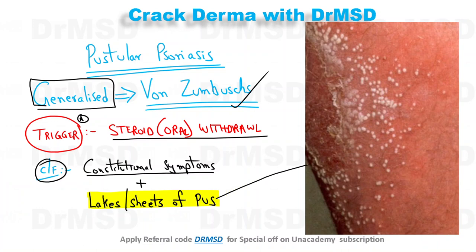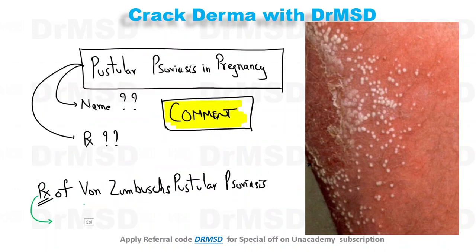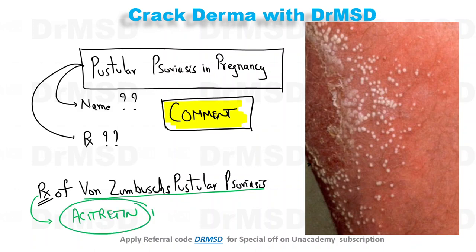This picture could be asked as an image-based question in the INICET exam, so you should be very confident about this clinical picture. The treatment of Von Zumbusch pustular psoriasis — the drug of choice is acitretin.